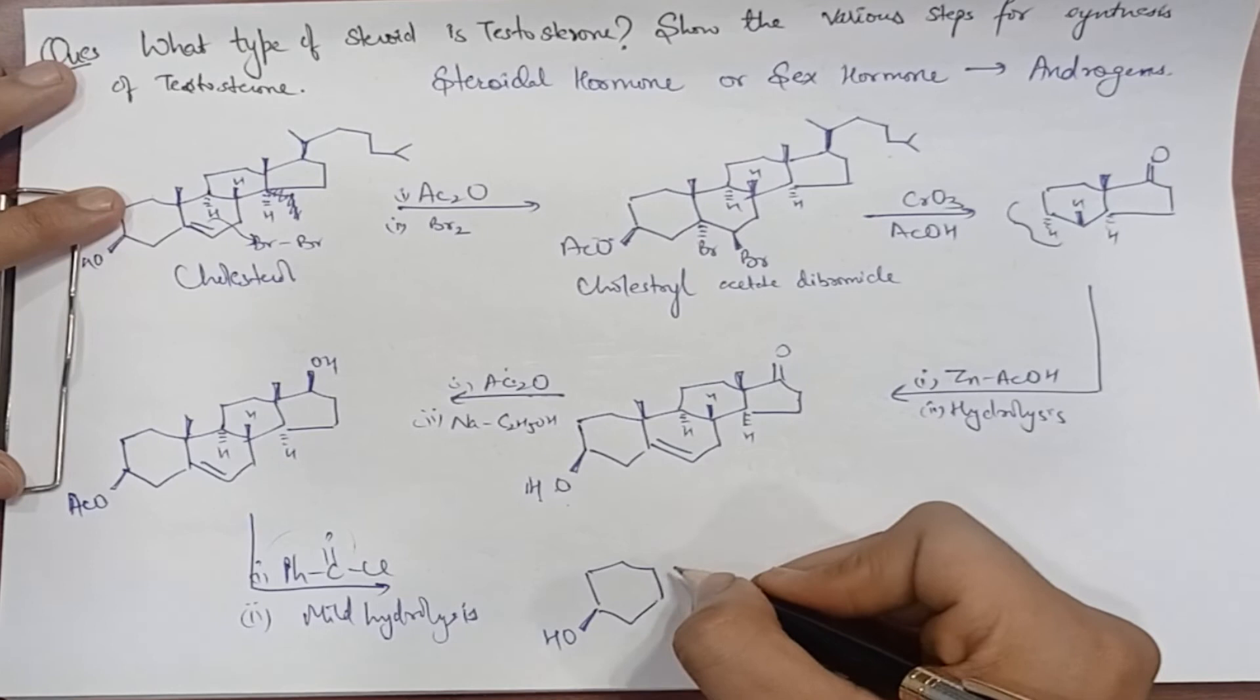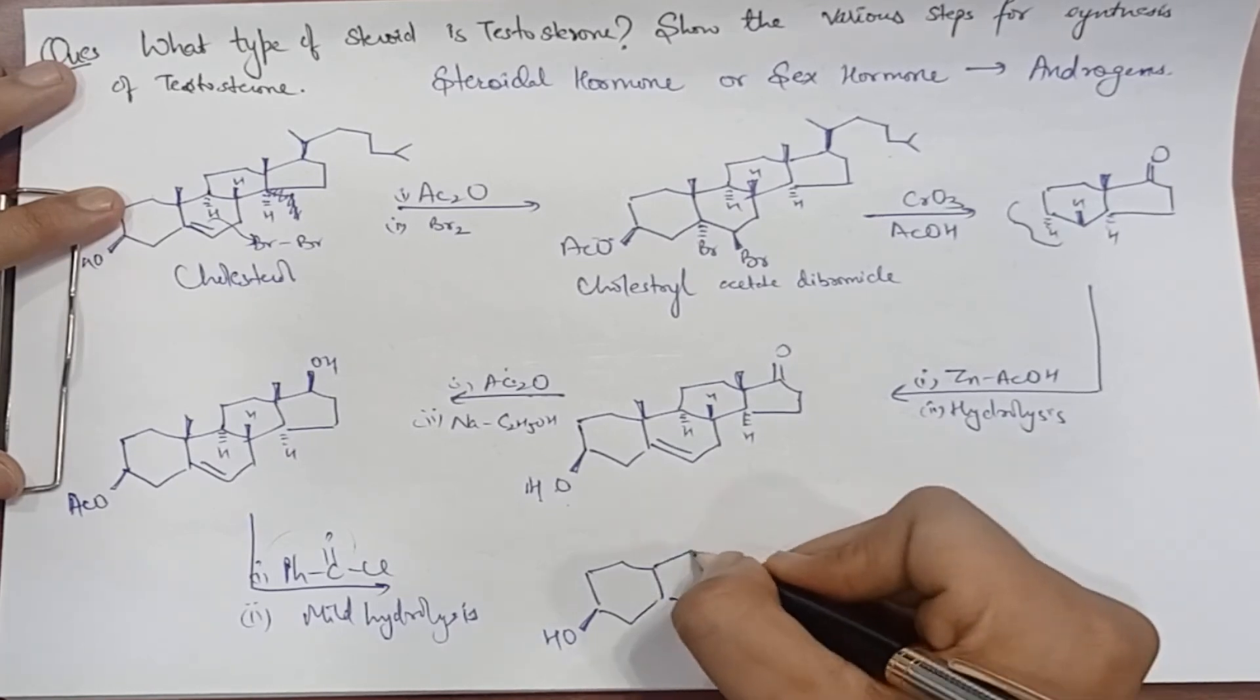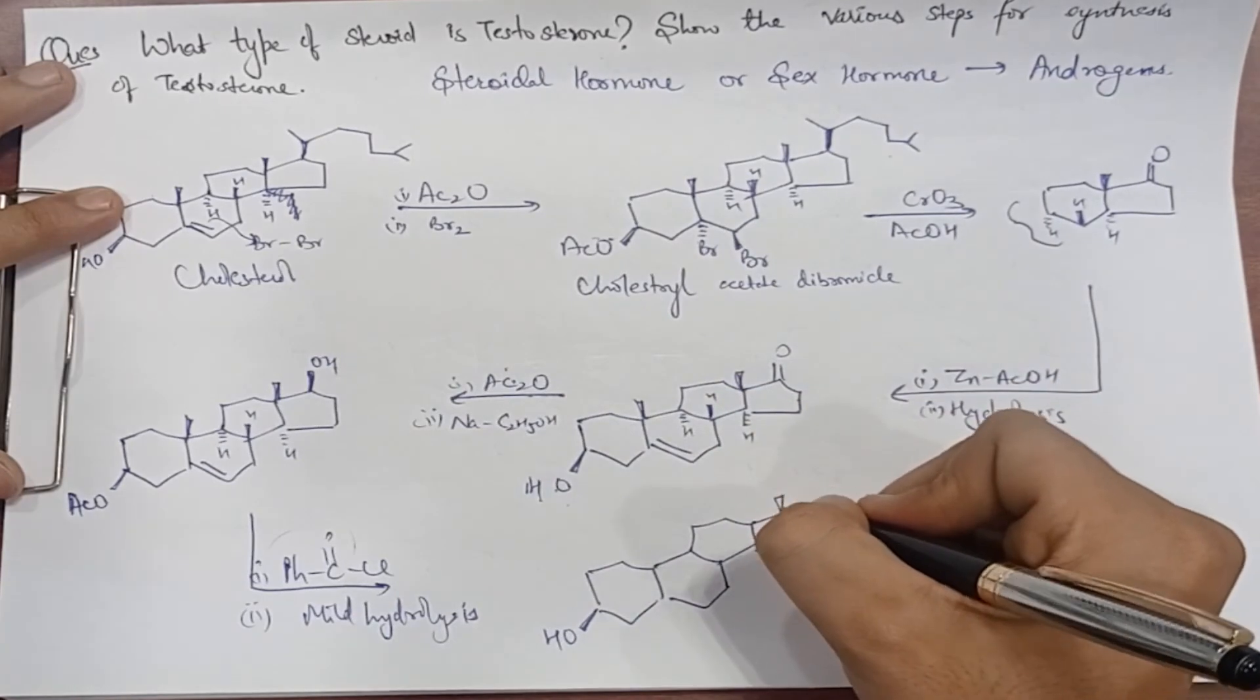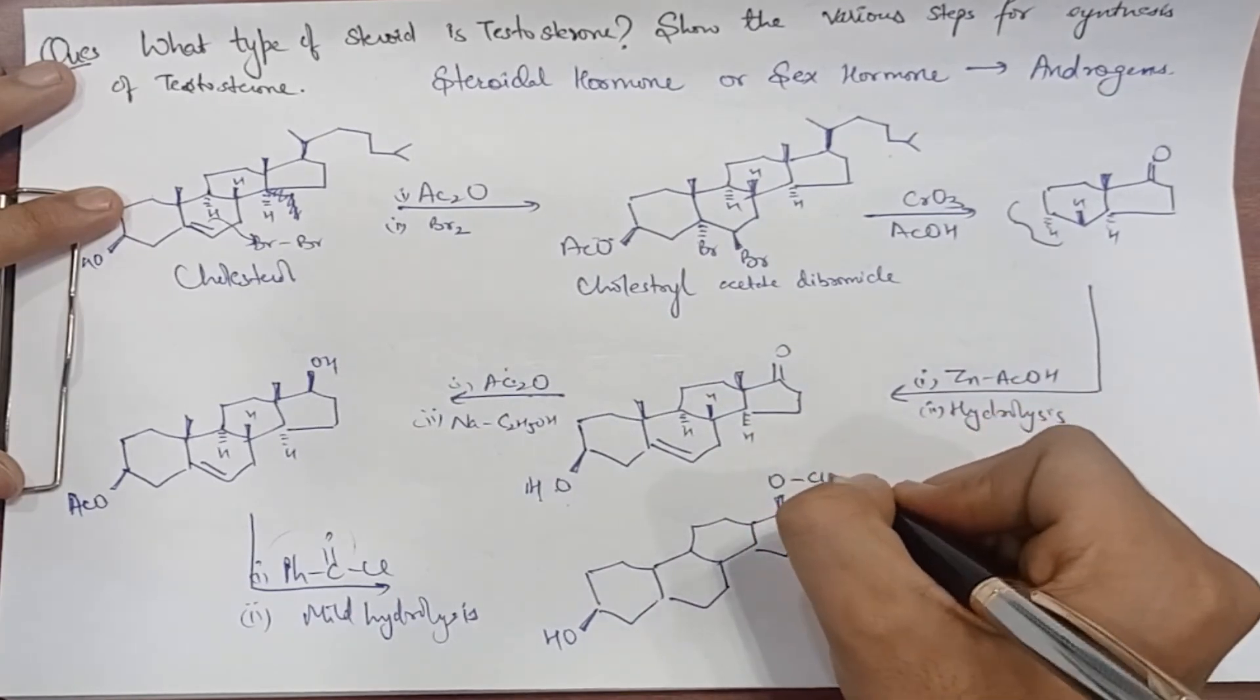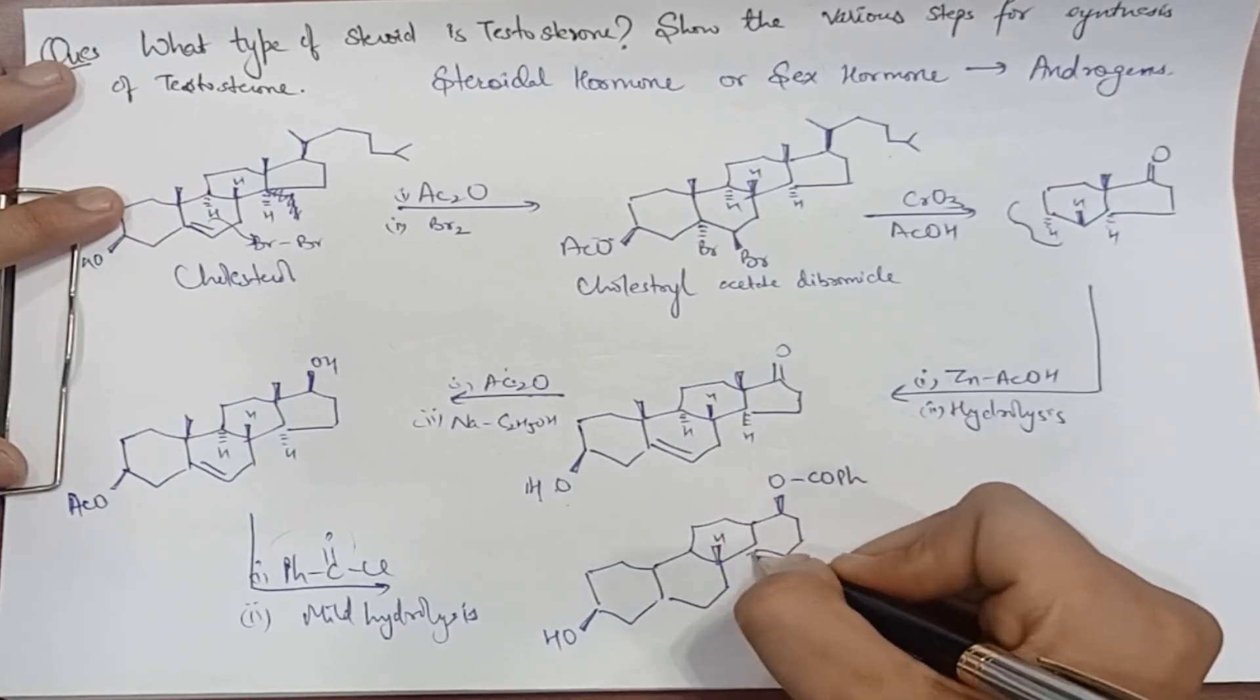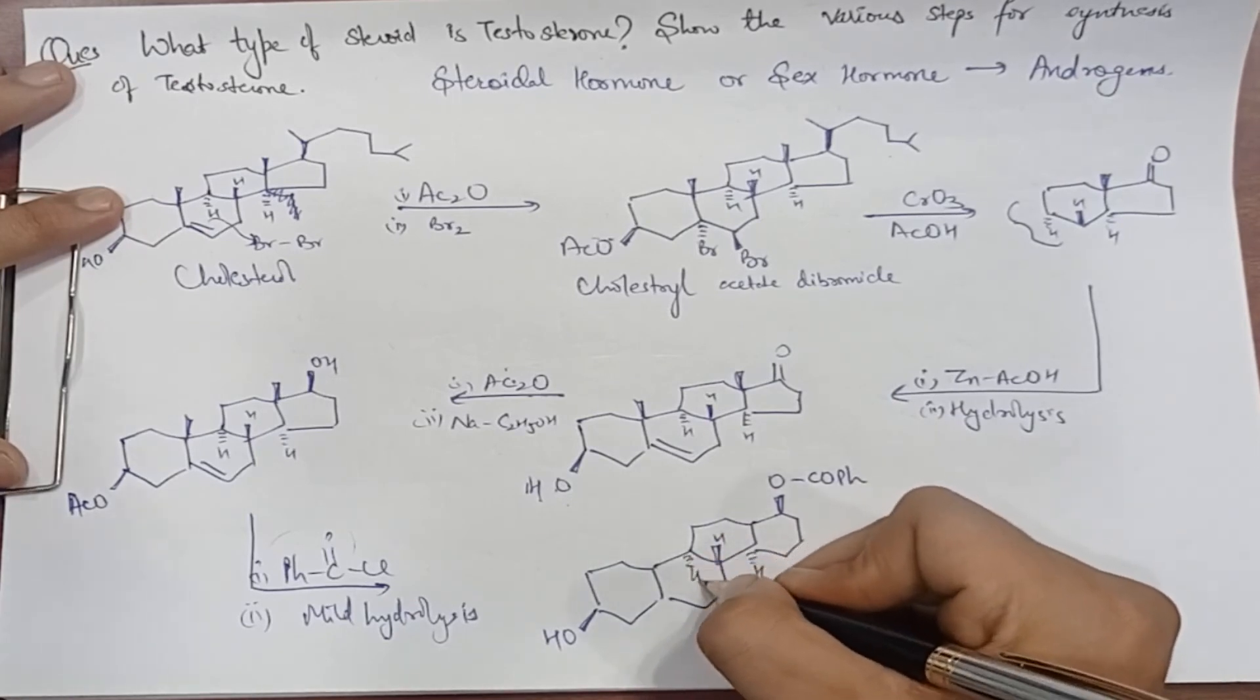Here OH, hydrogens here, here OH-CO-Ph will be added. The rest stays the same, with double bond and two angular methyl groups.